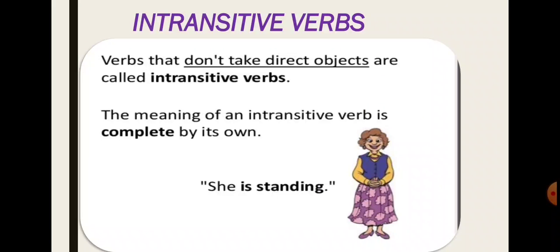Now, what is an intransitive verb? Verbs that don't take direct objects are called intransitive verbs. The meaning of an intransitive verb is complete by its own. For example, she is tending.